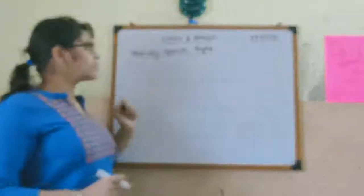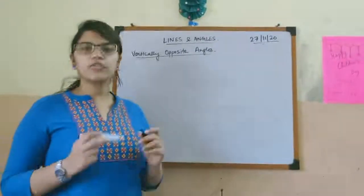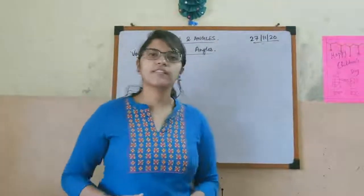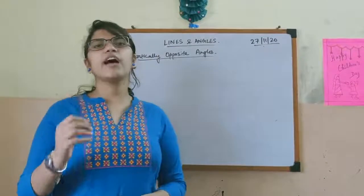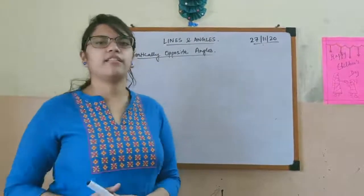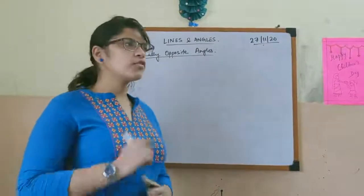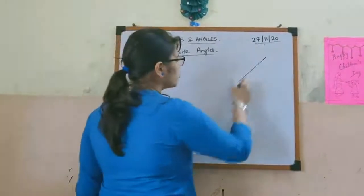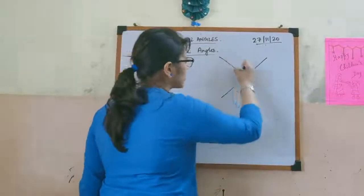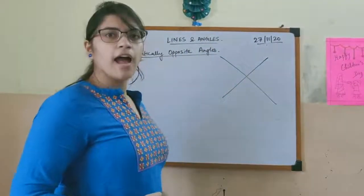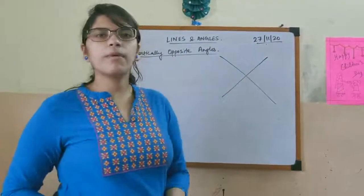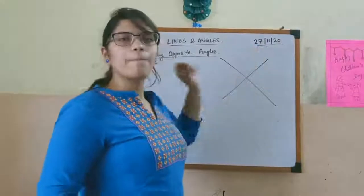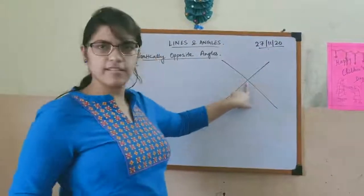Vertically opposite angles are those two pairs of angles which can be formed when we have two straight lines. So let us first see — suppose we have two straight lines. And always remember, these two straight lines must intersect at a point.